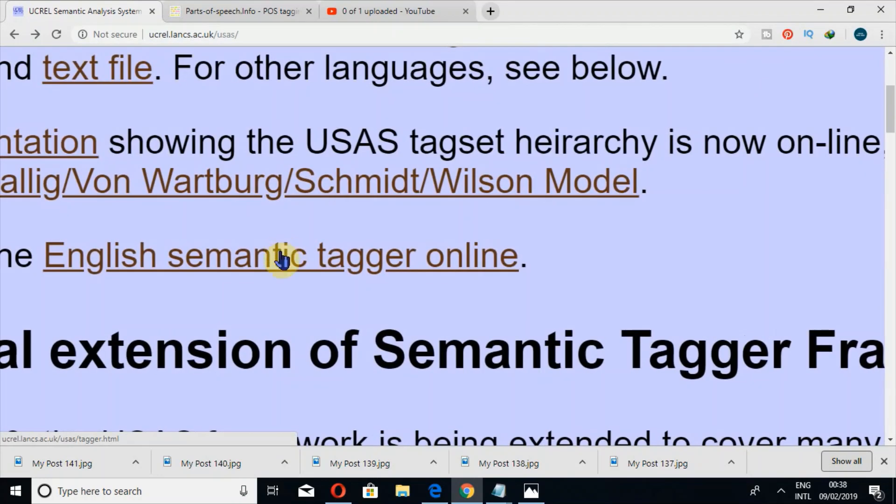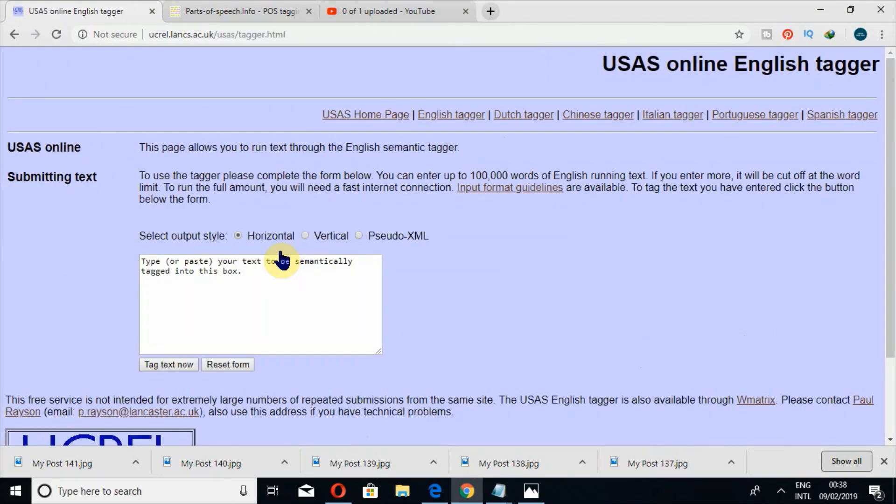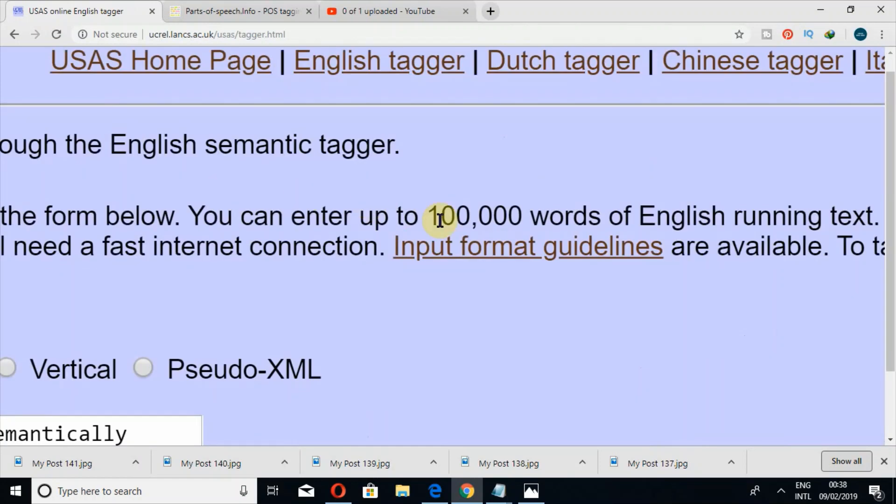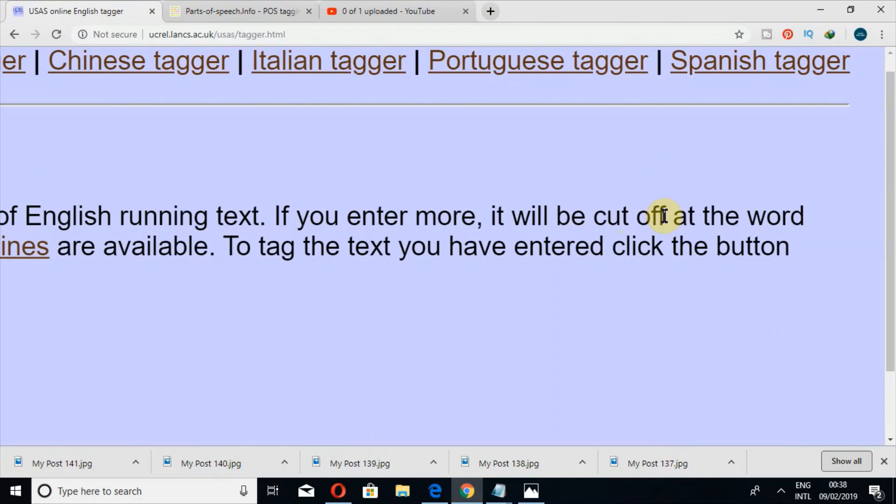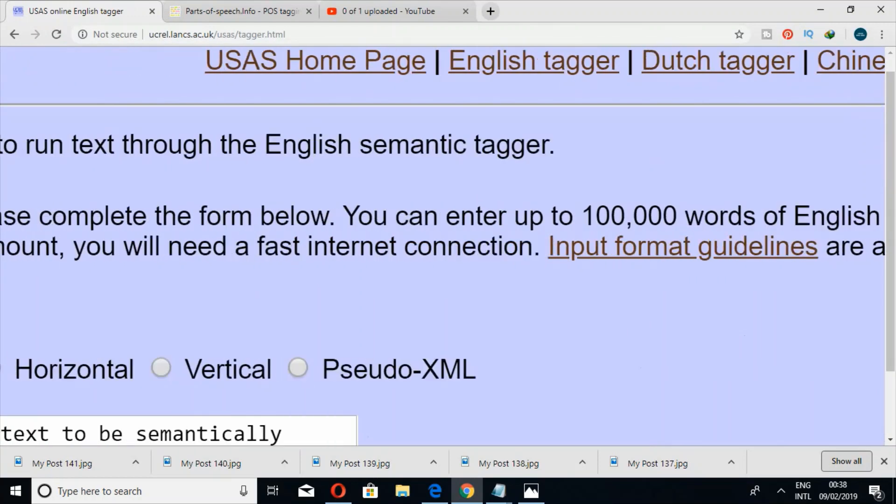Now let's move to the practical work. In the last, you can see English semantic tagger online. You have to click on this. Now here there are a few limitations. You can enter up to 100,000 words, and if you enter more, it will be cut off.